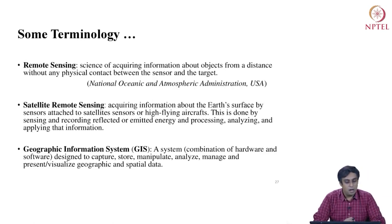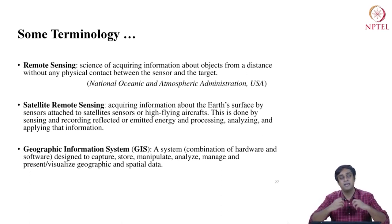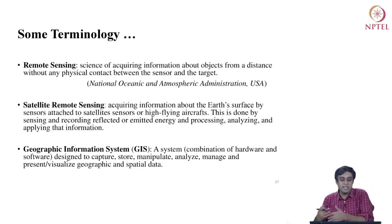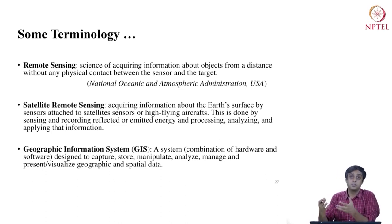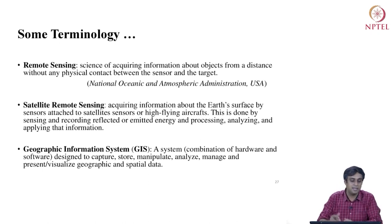We will begin with some terminology. The first important term when it comes to geostatistical data is remote sensing. Remote sensing is the science of acquiring information about objects from a distance without any physical contact between the sensor — the one sensing information — and the target — the object of study. Satellite remote sensing is acquiring information about the earth's surface using sensors attached to satellites or high-flying aircraft, by sensing and recording reflected or emitted energy, and then processing, analyzing, and applying that information.